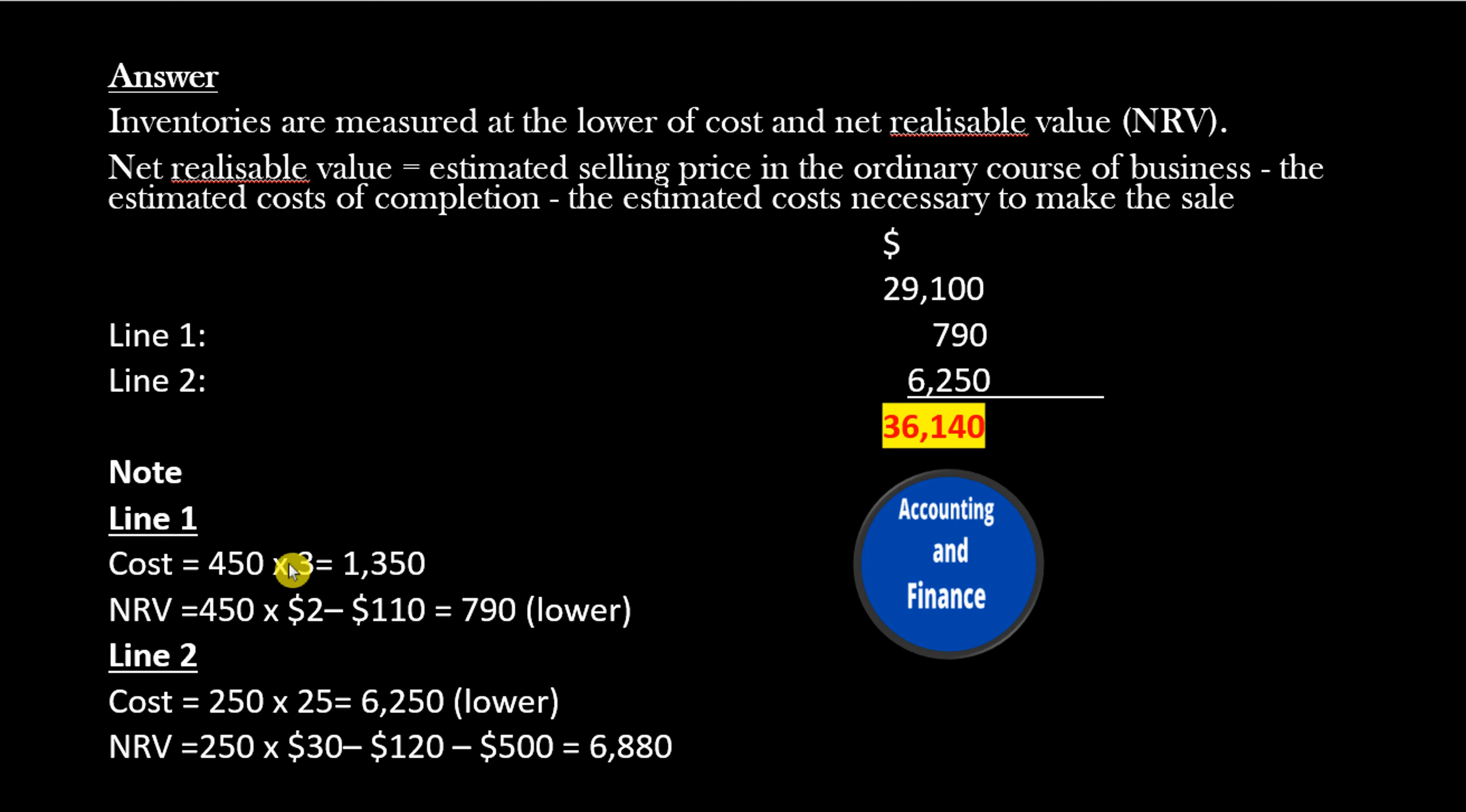Cost equals 450 times $3 equals $1,350. NRV equals 450 times $2 minus $110 equals $790 (lower).